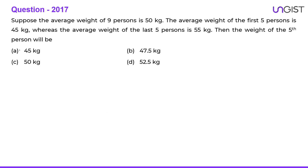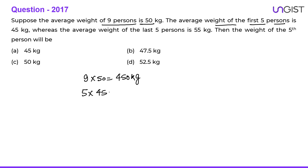The next question: suppose the average weight of 9 persons is 50 kg. Their total sum is 9 × 50 = 450 kg. The average weight of the first 5 persons is 45 kg, so their total is 5 × 45 = 225 kg. The average weight of the last 5 persons is 55 kg, so their total is 5 × 55 = 275 kg.